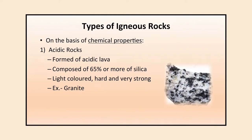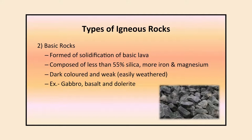On the basis of chemical properties there are also two types of igneous rocks: acidic rocks and basic rocks. Acidic rocks are formed of acidic lava, composed of 65% or more silica, light in color, hard and very strong — example is granite. Basic rocks are formed by solidification of basic lava, composed of less than 55% silica with more iron and magnesium, dark in color and weak — easily weathered. Examples are gabbro, basalt, and dolerite.